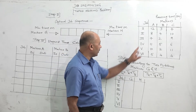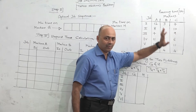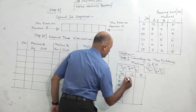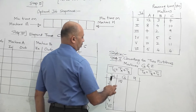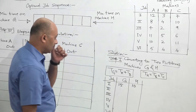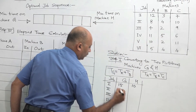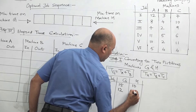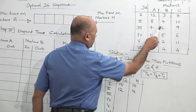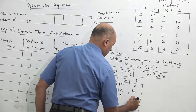Time for G is time of A plus time of B, and time for H is time of B plus time of C. For job 1: 12 plus 3 = 15 for G, and 3 plus 7 = 10 for H. Job 2: 8 plus 4 = 12, and 4 plus 10 = 14. Job 3: 7 plus 2 = 9, and 2 plus 9 = 11.